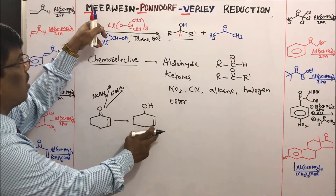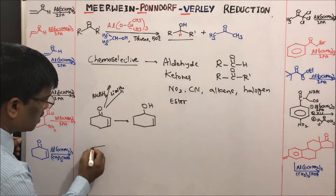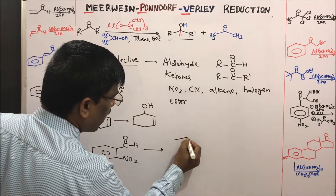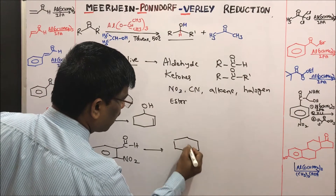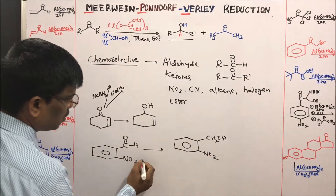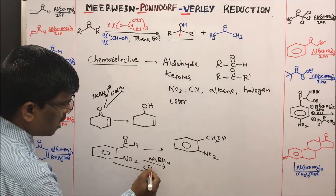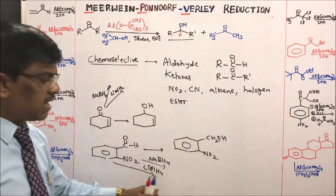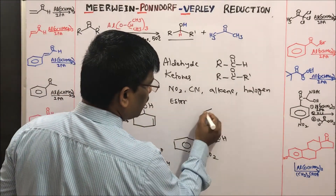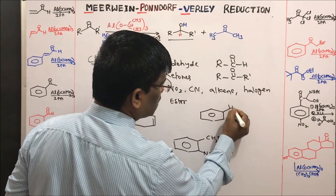MPV reduction is the only reaction available for reducing alpha-beta unsaturated ketones to allyl-type alcohols. At the same time, if asked to reduce ortho-nitrobenzaldehyde to ortho-nitrobenzyl alcohol, consider your reagent options — sodium borohydride or lithium aluminum hydride — and guess what compound each would give.